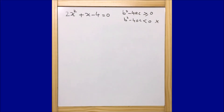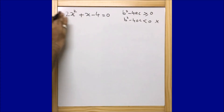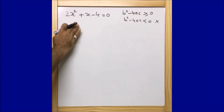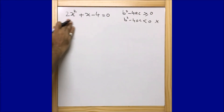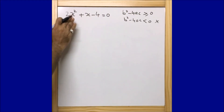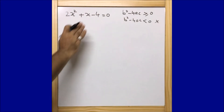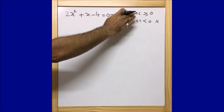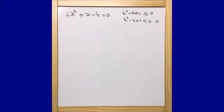Now moving to this question — I know that the real roots exist for this equation, so I am not going to calculate b² - 4ac here. I leave that to you. The given equation is 2x² + x - 4 = 0, and we are going to use the method of completing the square.